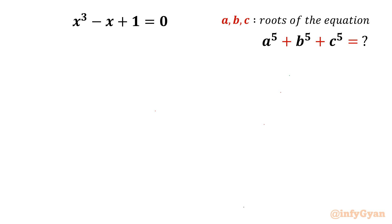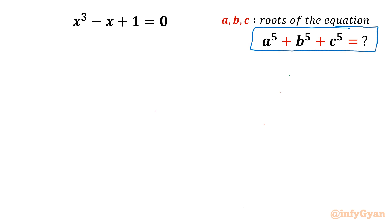Welcome to Infigyan, my dear friends, in this very exciting and powerful video on algebraic challenging equations. In this series we are going to take up one very interesting problem from Olympiads. A cubic polynomial equation is given: x³ - x + 1 = 0, with roots a, b, and c. We have to evaluate the expression a⁵ + b⁵ + c⁵. So let us get started.